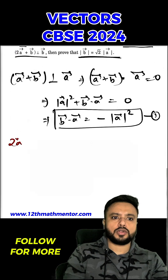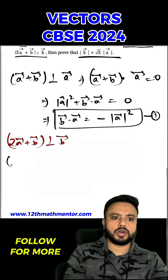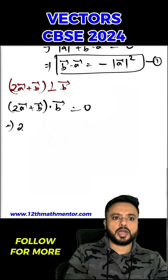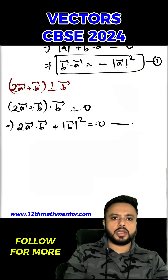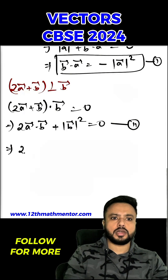It is also given that 2A+B is perpendicular to B, so their dot product is also zero. That means (2A+B)·B = 0. From here, we get 2A·B + |B|² = 0. Now in this second equation, we substitute the value of B·A, which is -|A|², from equation 1.